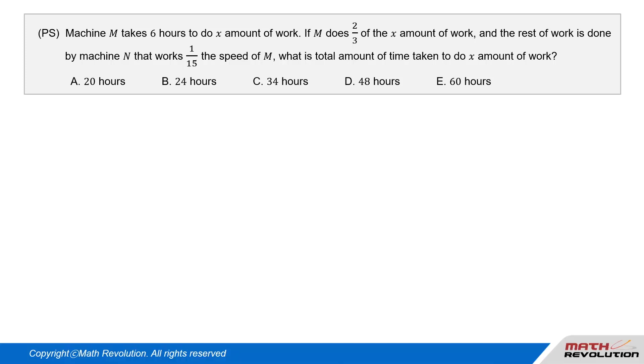Question 2 (P.S.): Machine M takes 6 hours to do X amount of work. If M does 2/3 of the X amount of work, and the rest of the work is done by machine N that works 1/15 the speed of M, what is the total amount of time taken to do X amount of work?